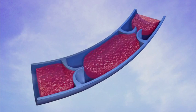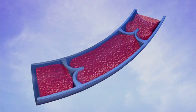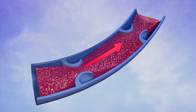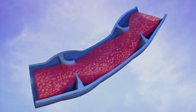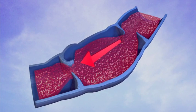In healthy veins, one-way valves prevent blood from pooling and flowing backwards. In diseased veins, however, the valves do not close properly and allow blood to pool in the extremity.